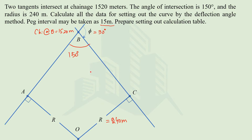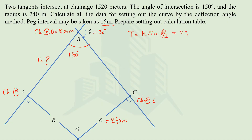There is some basic data we need to calculate, starting with the chainage at point A, the start of the curve. The tangent length of a simple circular curve is calculated by the formula R × tan(Δ/2). With radius 240 meters and deflection angle 30 degrees, the tangent length works out to approximately 64.3 meters.